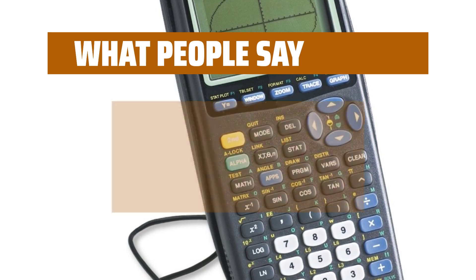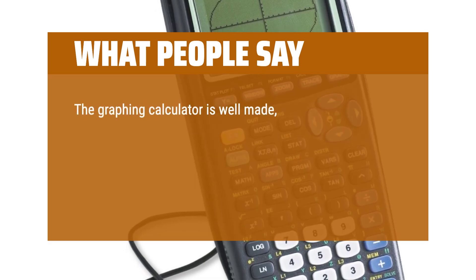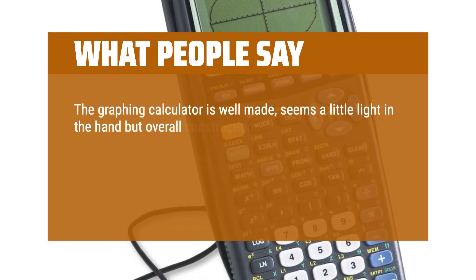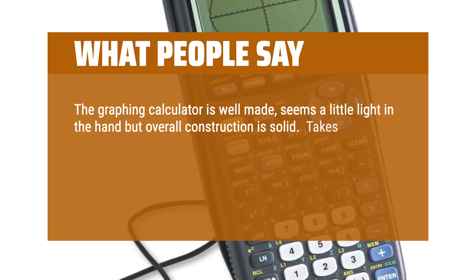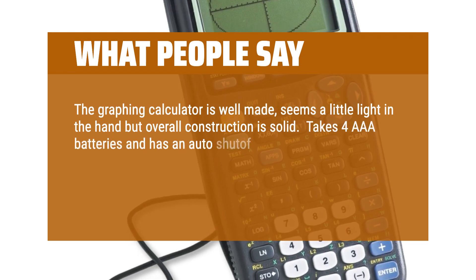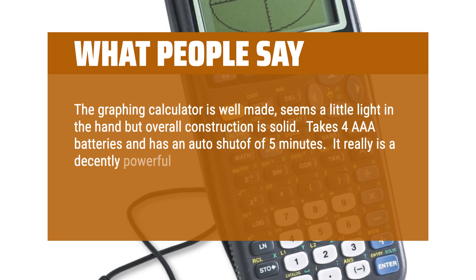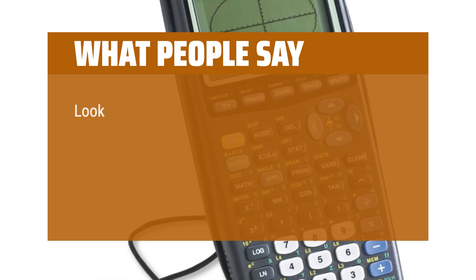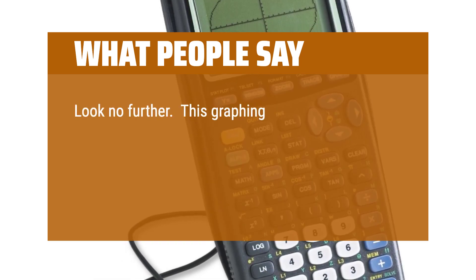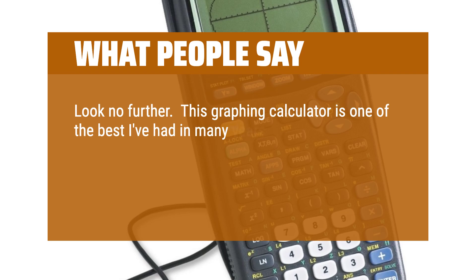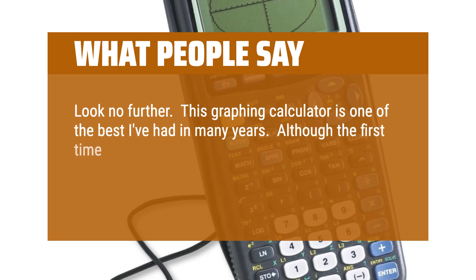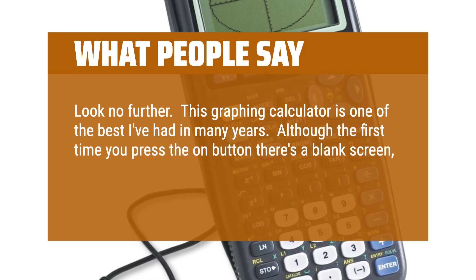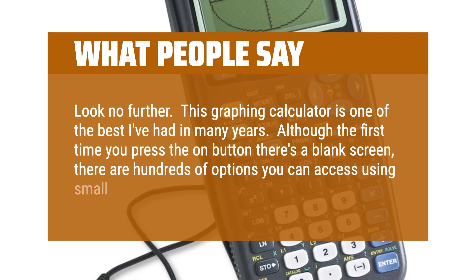What people say: The graphing calculator is well made, seems a little light in the hand, but overall construction is solid. Takes four AAA batteries and has an auto shutoff of five minutes. It really is a decently powerful calculator that will get you through your math and is just powerful enough to not let you cheat. Look no further. This graphing calculator is one of the best I've had in many years. Although the first time you press the on button there's a blank screen, there are hundreds of options you can access using small amounts of buttons.